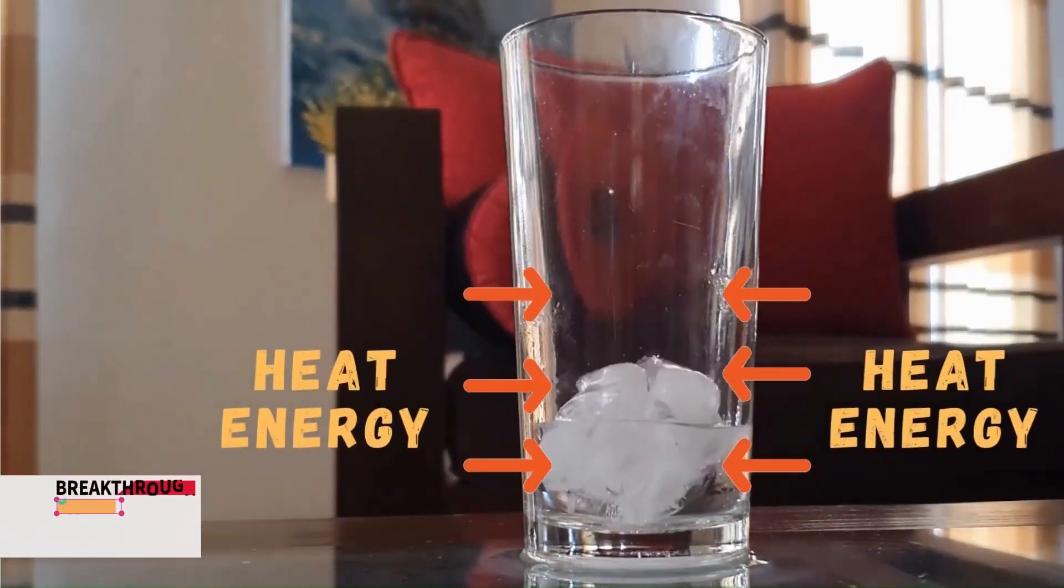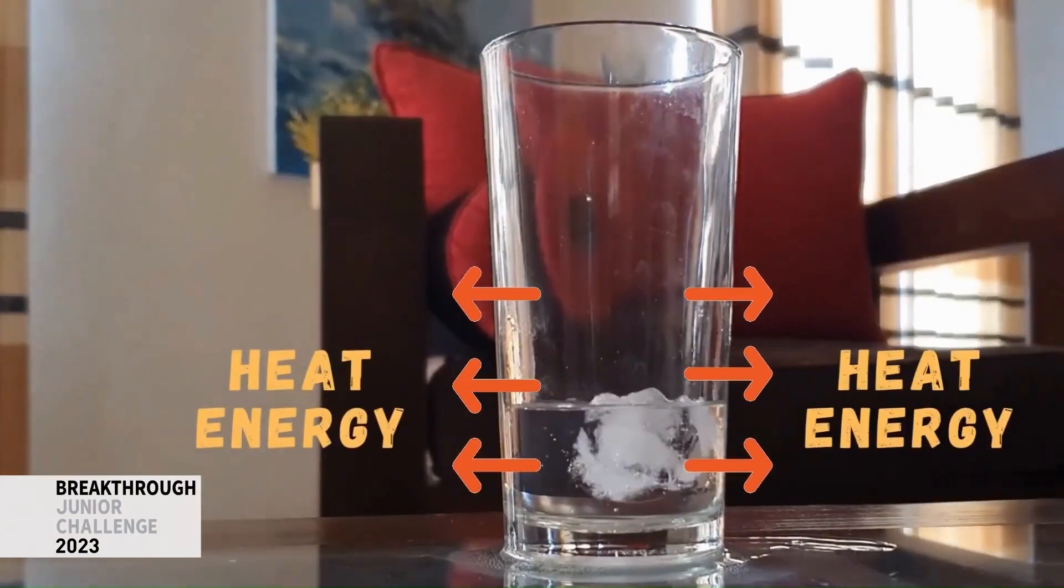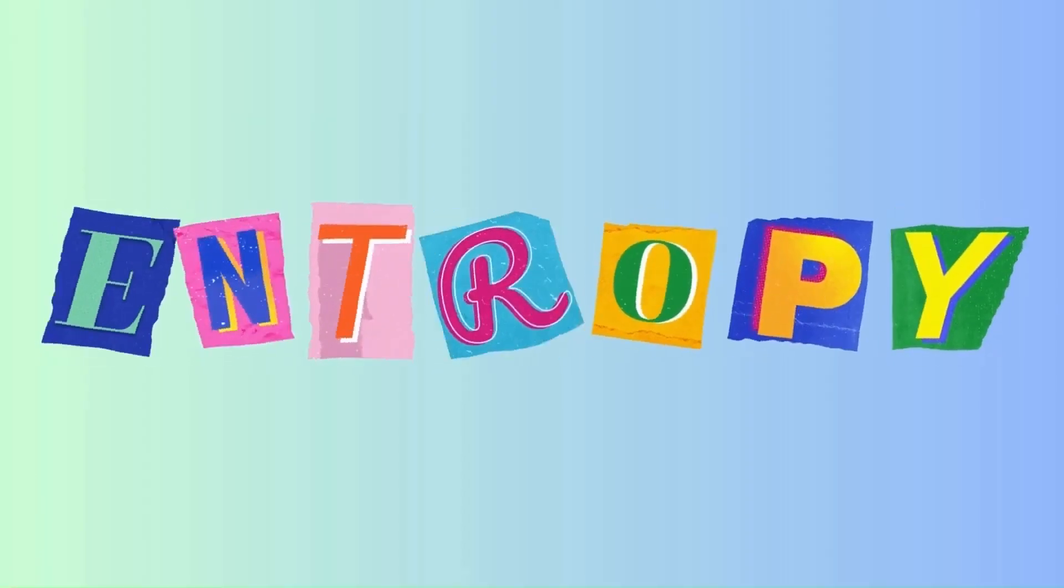If we leave some ice outside, we all know it melts because heat energy flows into the ice from the surrounding. But here's a thought: if we leave water outside, why can't heat energy flow out of it and convert it into ice? This is because of something known as entropy.